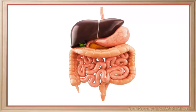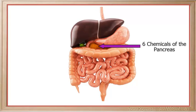Other than the structure and function of the different parts of the digestive system, you will have to be able to describe in detail the digestion of carbohydrates, proteins, and lipids. Also, be sure that you know and understand the function of the six chemicals that are released from the pancreas, and know at least four of the six functions of the liver that are listed in the student notes. Thank you.